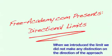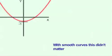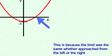When we introduced the limit in the previous lecture, we did not make any distinction on the direction of the approach. With smooth curves this didn't matter. This is because the limit was the same whether approached from the left or the right.